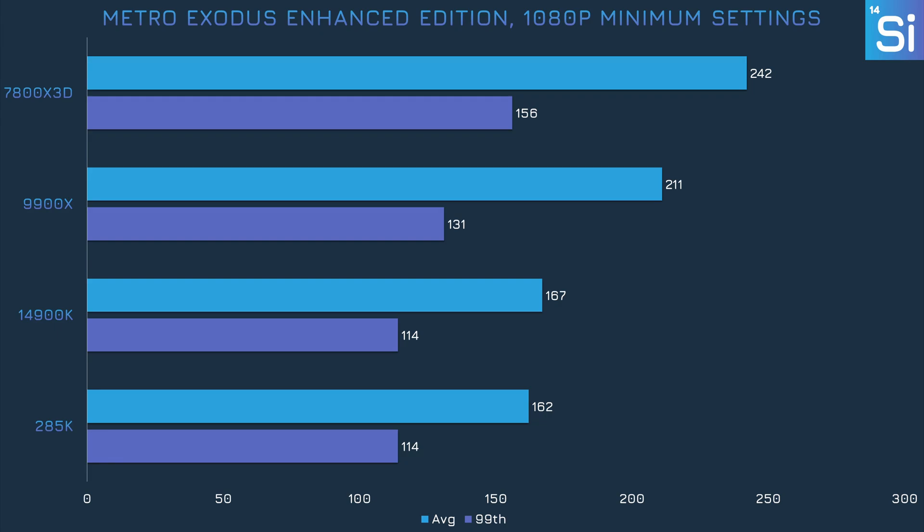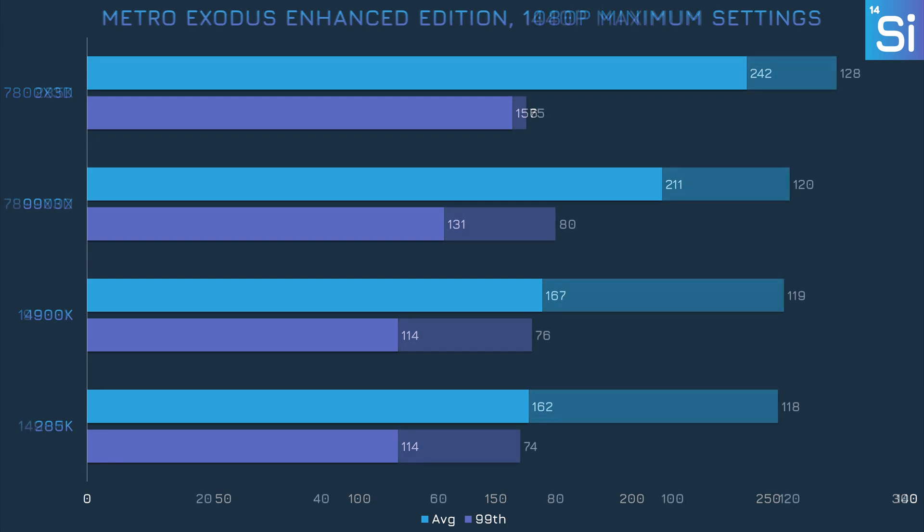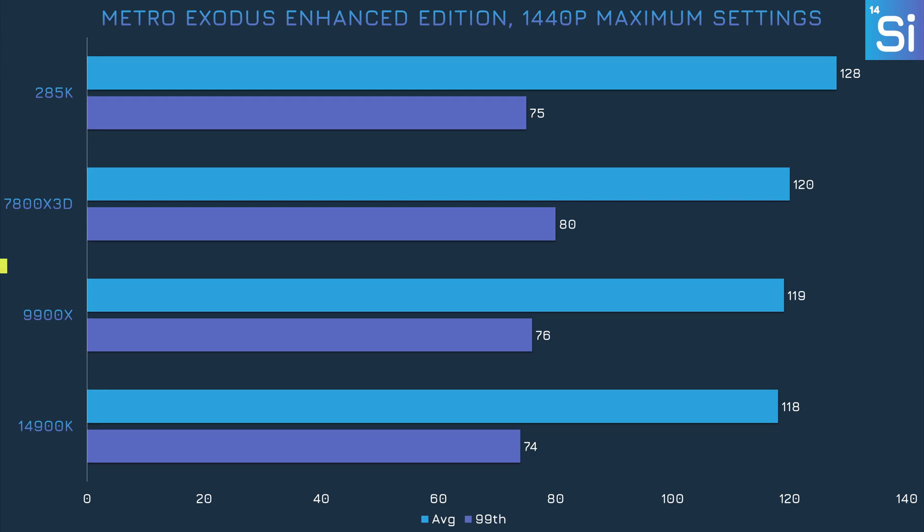In Metro Exodus Enhanced Edition, AMD CPUs are clearly favored at low settings, while the 285K and 14900K languish in a joint last place. But the tables are turned at 1440p, with the 285K in the lead, albeit not by much since a GPU bottleneck seems to come into play with those settings.